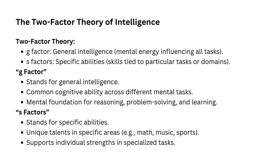Spearman noticed that people who do well in one area of mental ability, like math, tend to do well in other areas like verbal reasoning. This suggested to him that there is a common underlying cognitive ability influencing all these tasks — hence the term general intelligence. Next is the S-factor. While the G-factor covers general mental ability, Spearman also identified S-factors, which are specific abilities tied to particular tasks. For example, someone might be really good at mathematics but not as strong in language — that difference is due to specific abilities, or S-factors.